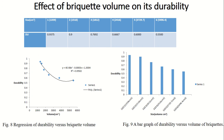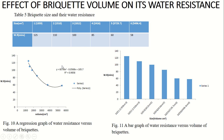The effect of briquette volume on durability shows that durability reduces with an increase in briquette volume or briquette size — the larger the briquettes, the lower the durability. This is perfectly correlated, and we can see the formula. For water resistance, we can see that larger briquettes offer lower water resistance — the larger the briquettes, the lower the water resistance. Here is the R-squared value and the formula relating them.